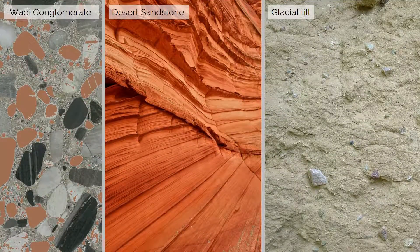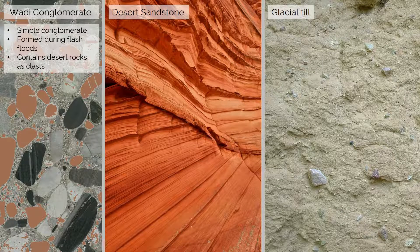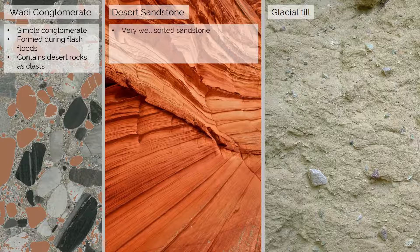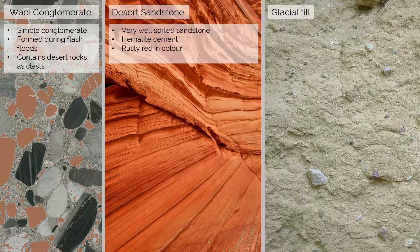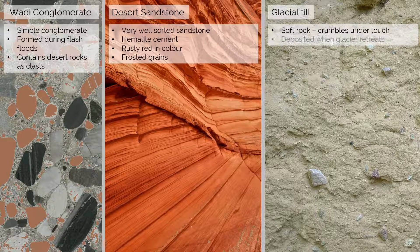Some clastic sedimentary rocks are named after the location they formed. For example, wadi conglomerates are formed in wadi channels after a desert flash flood, and are often identifiable by their red clasts of desert sandstone. Desert sandstone is formed in a desert and is made of quartz grains like any other sandstone; however, the grains are very well sorted as sand is transported by the wind — grains too small are carried off the continent, grains too large are not picked up — causing a grain size between 0 and minus 1 phi. Finally, glacial till is carried at the front of a glacier; as the glacier retreats the till is left behind, poorly sorted with angular clasts, as ice can carry anything.